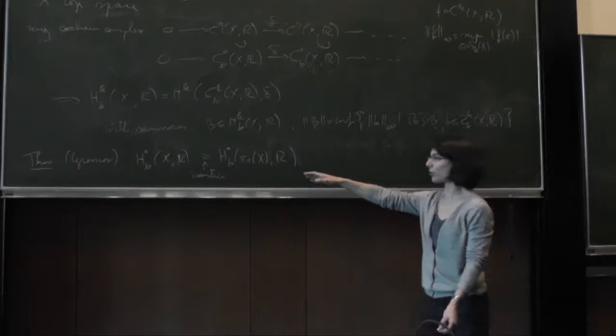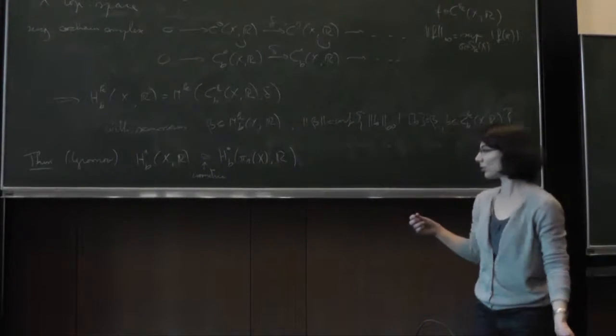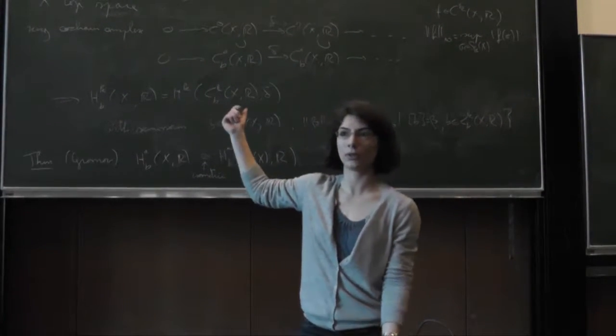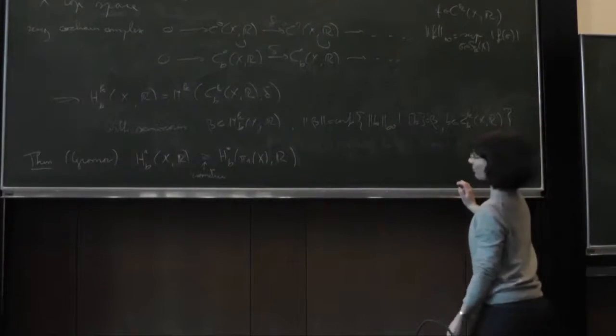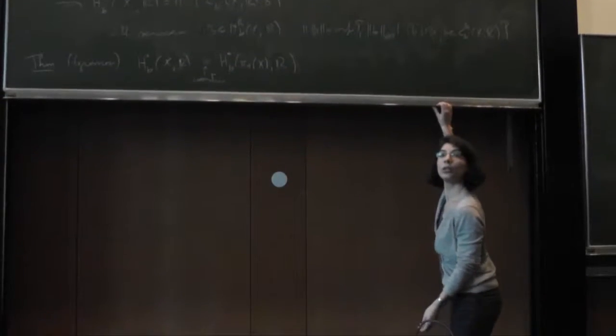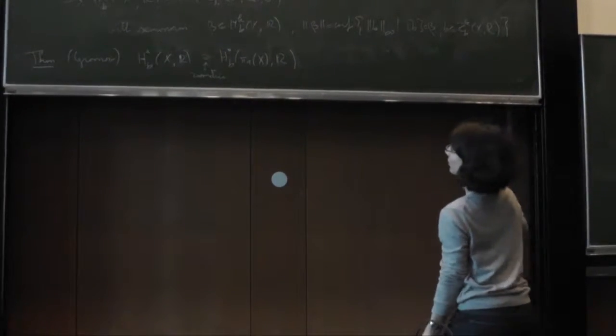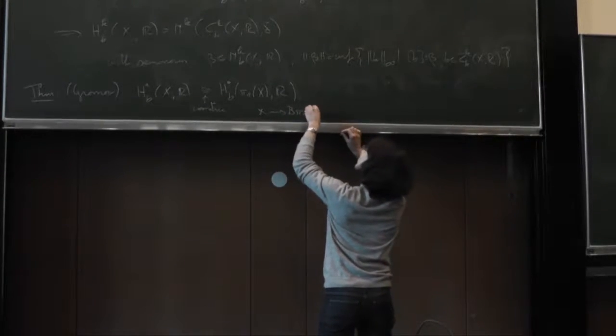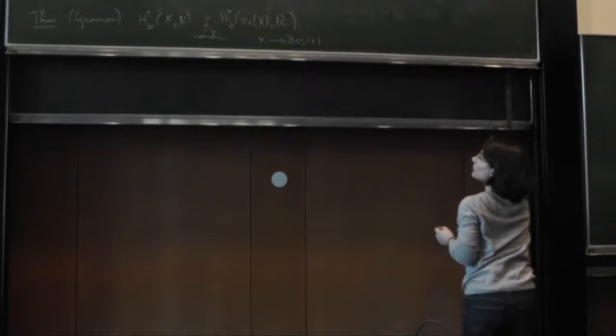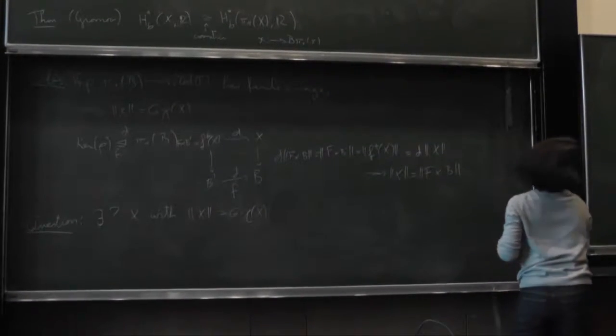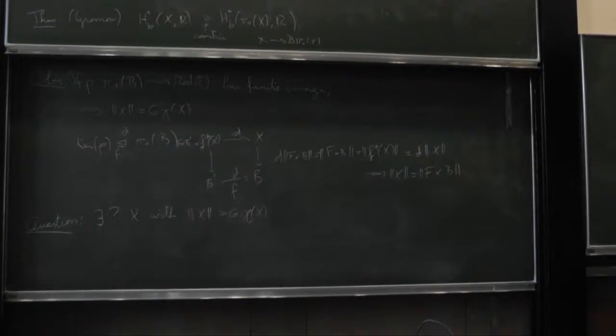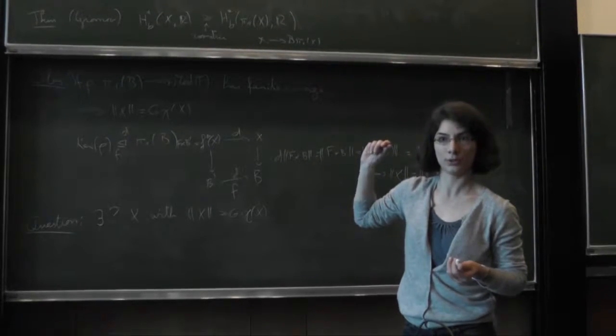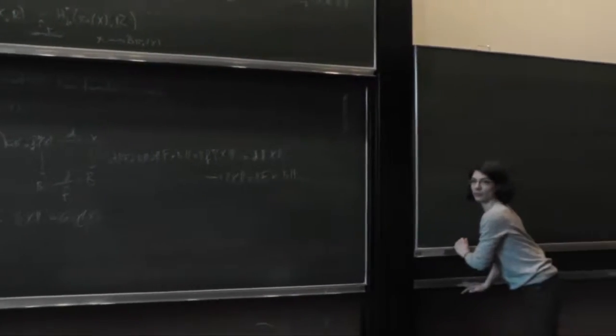So how did I write that? Yes. We have beta in Hk bounded of X with real coefficients. This cohomology norm will be the infimum of the sup-norms of all classes that represent it. So the infimum of the sup-norm of B such that B represents beta. And the bounded cohomology captures many interesting properties of spaces and manifolds. And let me just give one theorem by Gromov which says that the bounded cohomology depends only on the fundamental group of the space.